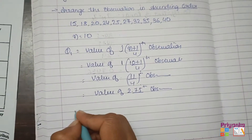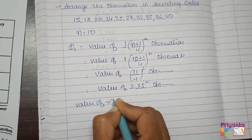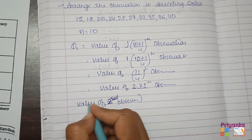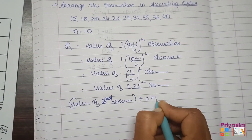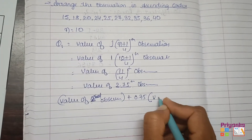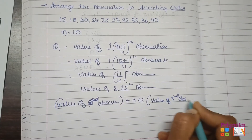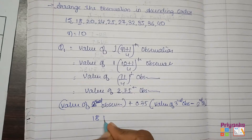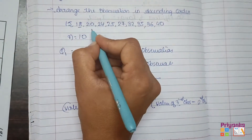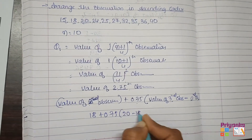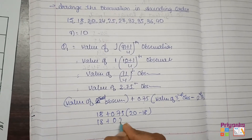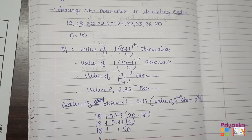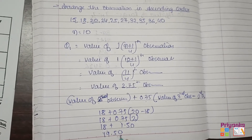When the answer has a decimal, take the value of the second observation plus 0.75 times (third observation minus second observation). So: 18 + 0.75 × (20 − 18) = 18 + 0.75 × 2 = 18 + 1.50 = 19.50. So Q1 = 19.50.